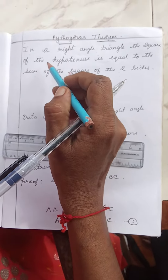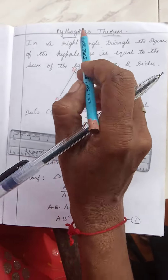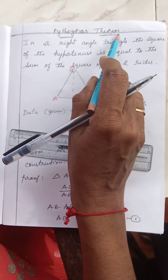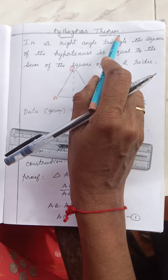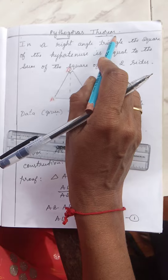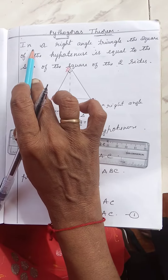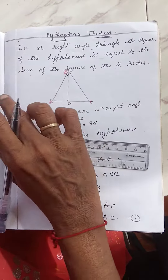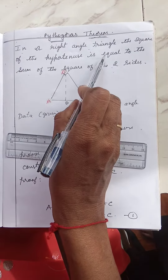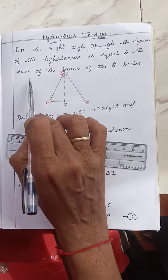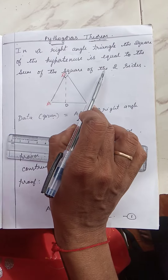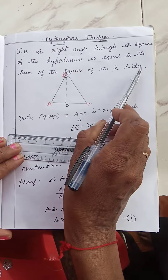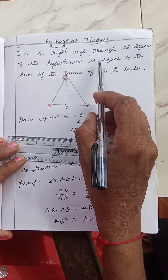Hello children, today I will teach you Pythagoras theorem, which is very important in mathematics. In a right-angled triangle, the square of the hypotenuse is equal to the sum of the squares of the two sides. This is the statement of the theorem.